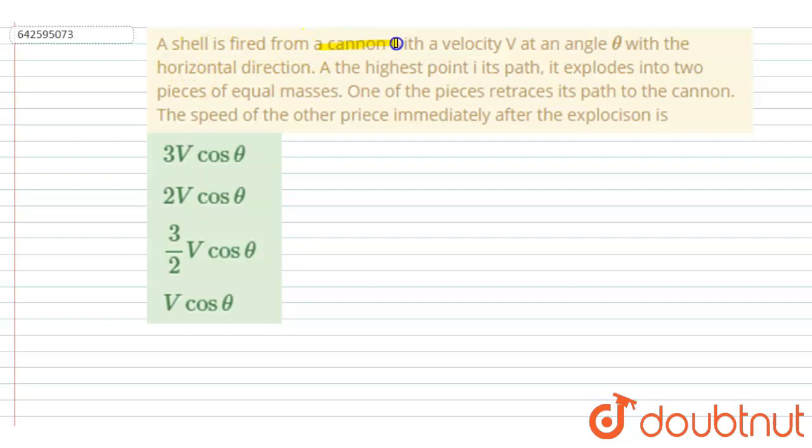from a cannon with velocity v at an angle theta with the horizontal. At the highest point of its path, it explodes into two pieces of equal mass. One of the pieces retraces its path to the cannon. The speed of the other piece immediately after the explosion is what? So let's suppose this was the